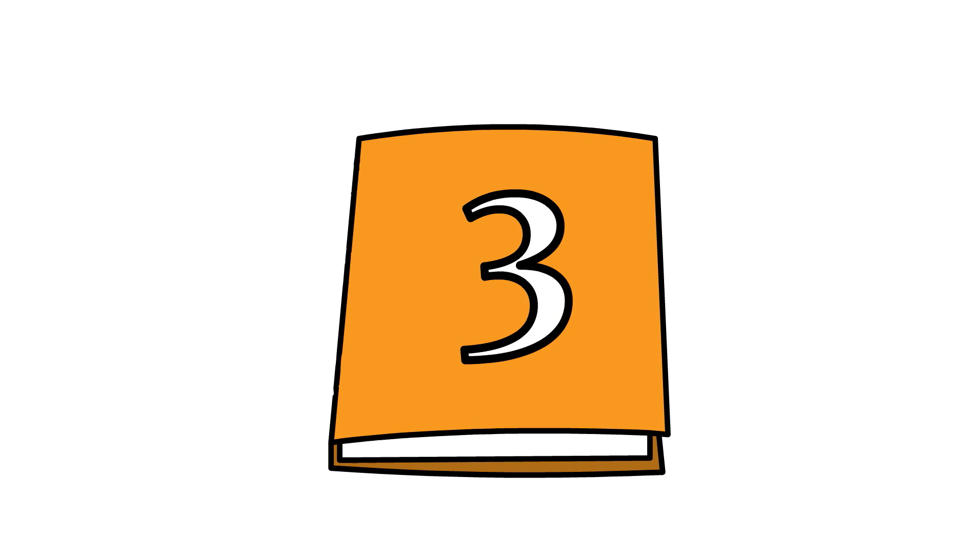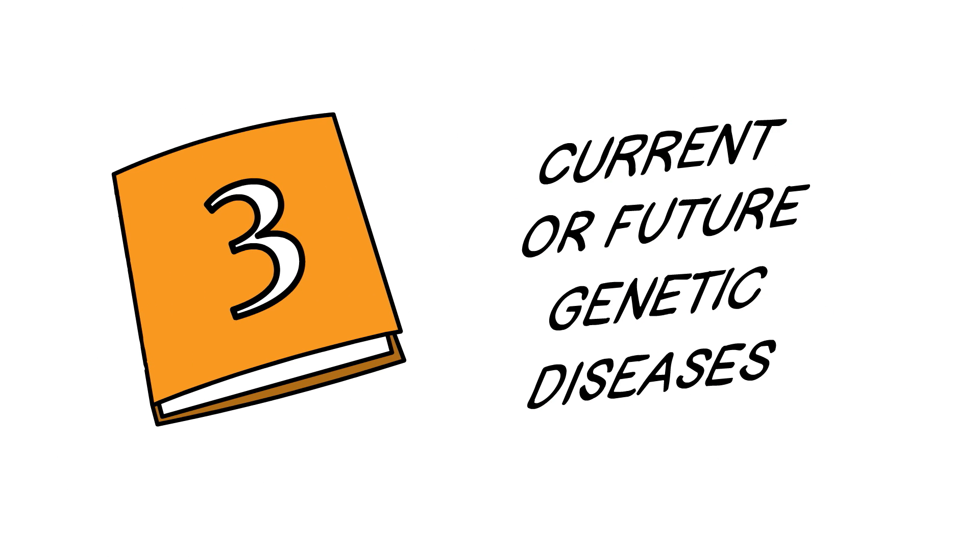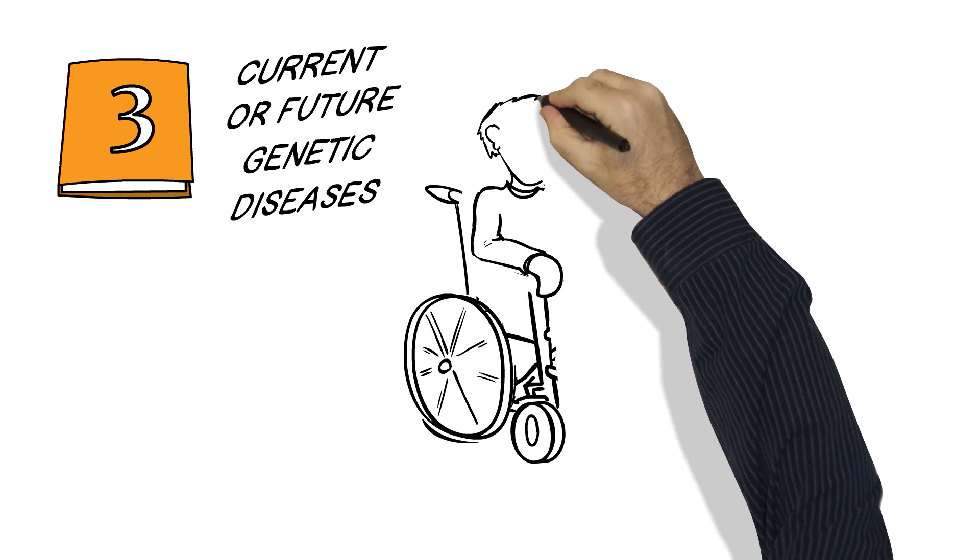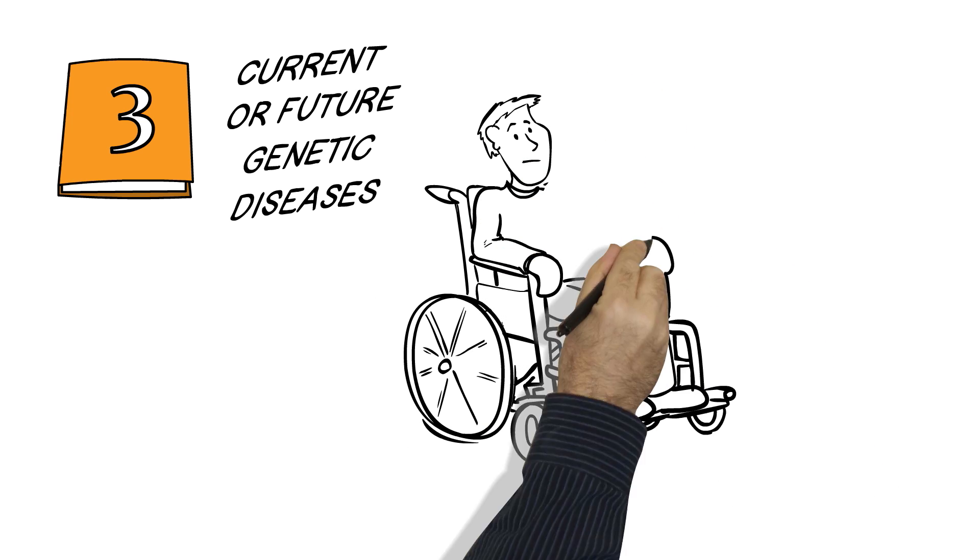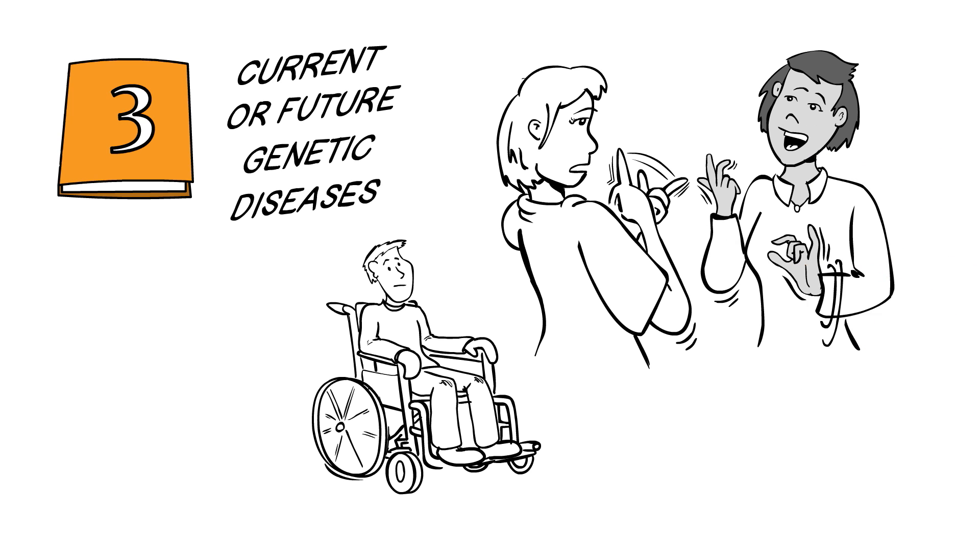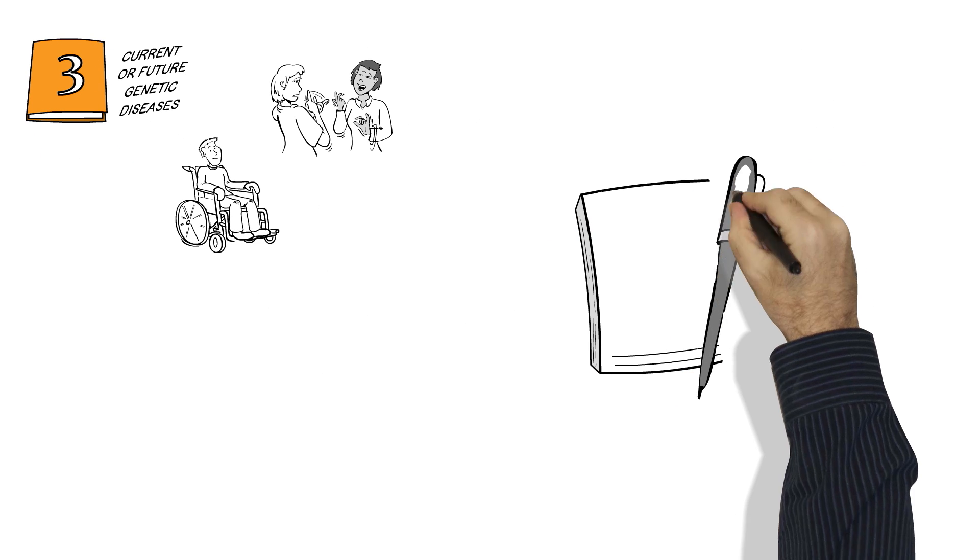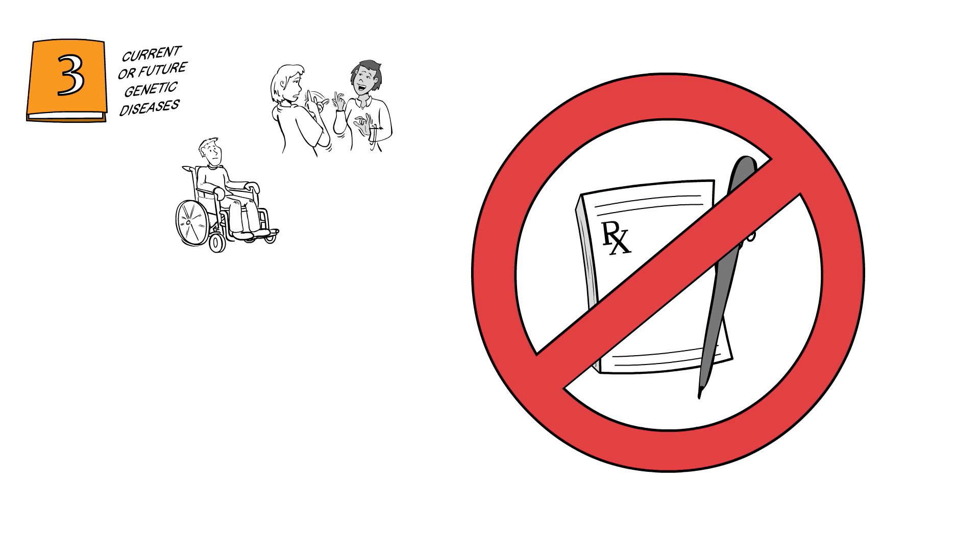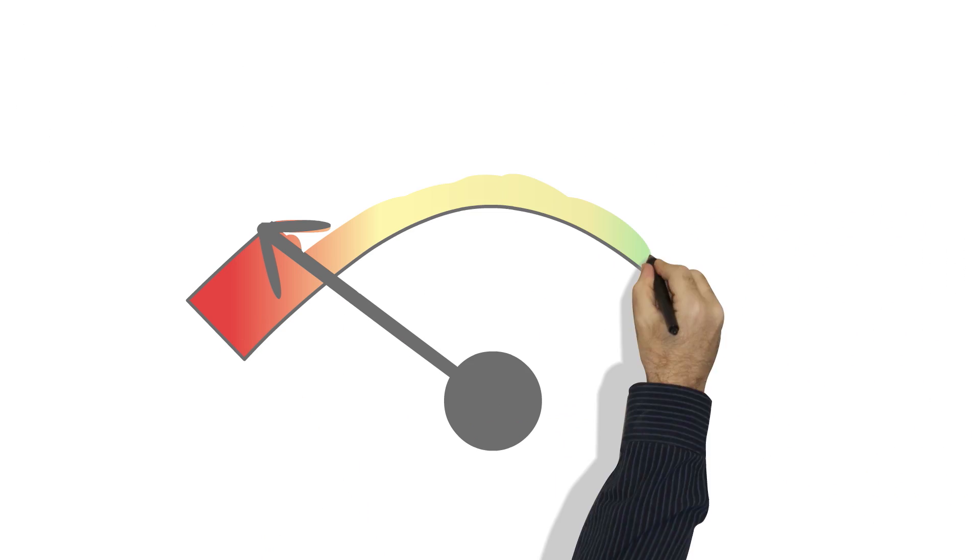Category 3 can reveal current or future genetic diseases. So for example muscular dystrophy, a genetic cause of troubled muscle function, or Wardenburg syndrome, a genetic cause of deafness. We don't have effective strategies to prevent diseases in category 3. Again, this makes us wonder whether we want to know.